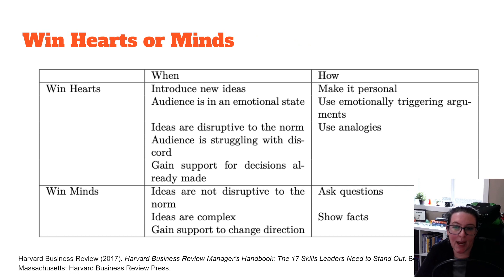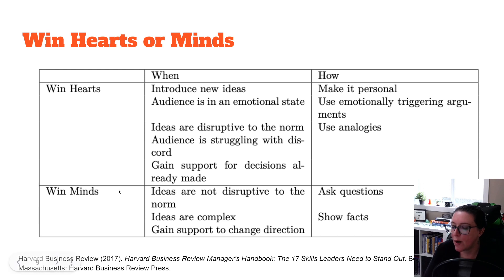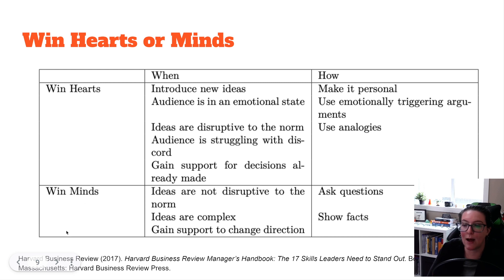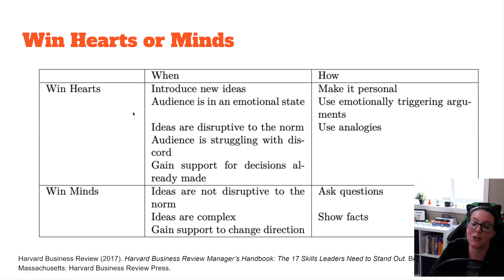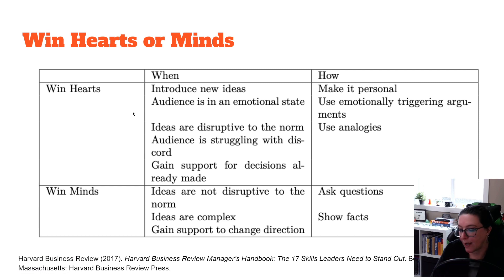If we are trying to change direction, we can also use the approach of winning minds — again, back to the pros and cons. With your story, are you trying to show the benefits, the downsides, and how the benefits outweigh those downsides? Or are you trying to trigger an emotion, a personal connection with what you're trying to convey? We need to think about those things as we're telling our story with our data.